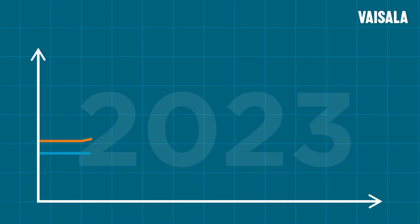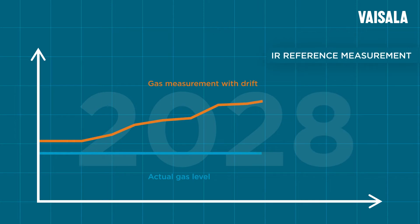But even this can't completely eliminate drift. That's why Vaisala developed IR reference measurement to get stable DGA results despite drift-causing elements.